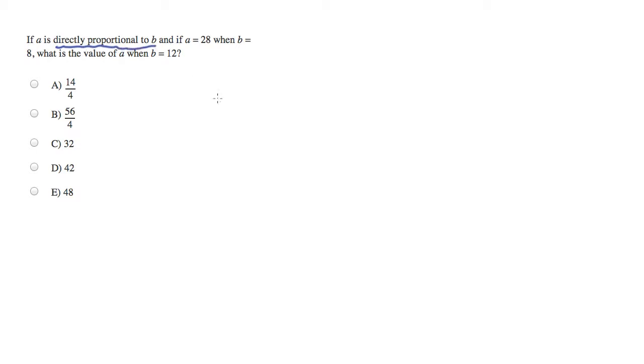So A is directly proportional to B. What does that mean? Well, that means that some constant number K is equal to the proportion of A to B. So they're literally saying the fraction A over B equals a constant number, no matter what.